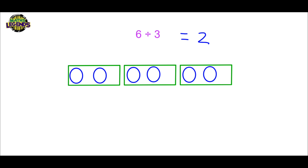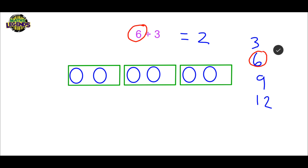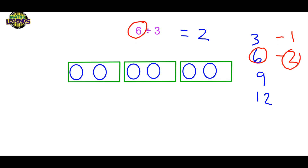Another way to look at this is we are splitting it into pockets of three. So we can write our three times tables: three, six, nine, twelve, and so on. We stop when we reach our target, six. Our target is here on the second number, so our answer is two, which matches what we found before.